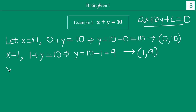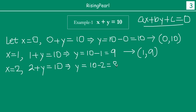We took 0, then 1. Let us also try x equal to 2 and see what we get. Putting 2 in place of x, we get 2 plus y equal to 10, so y equal to 10 minus 2, which is 8. So again, x=2 and y=8: 2 plus 8 is 10, and the right hand side is 10. So (2, 8) is another solution to our equation.